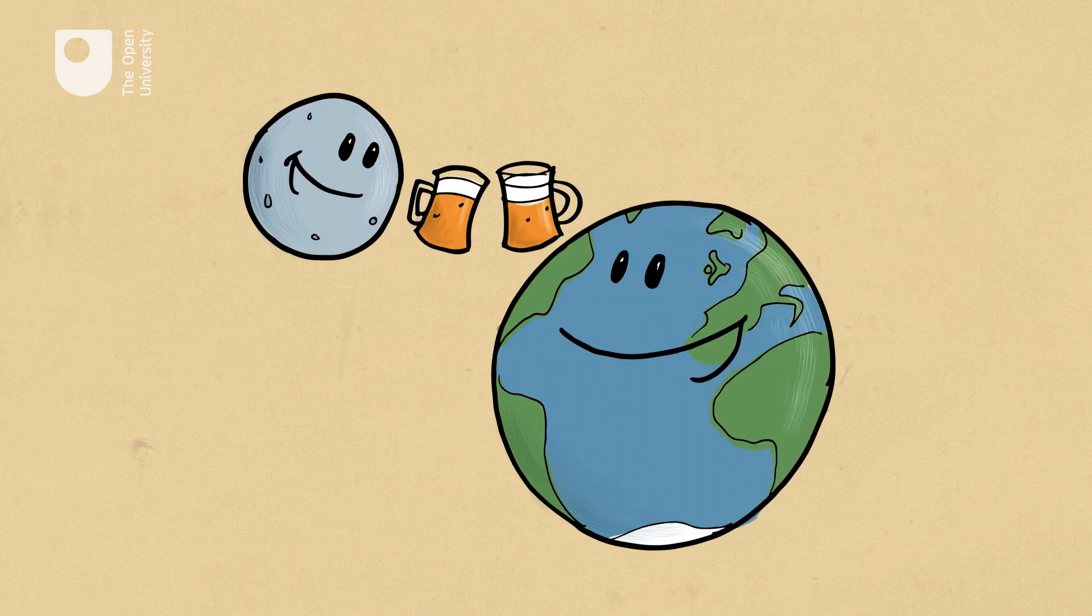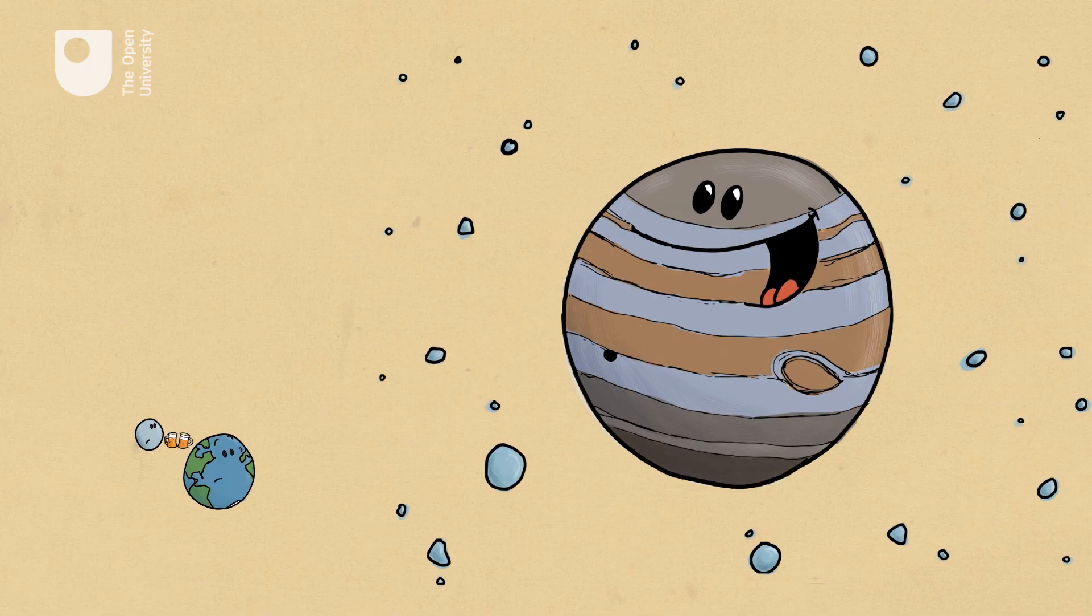The Moon is the Earth's only natural satellite. Most other planets have more than one natural satellite, and so do many other smaller objects.